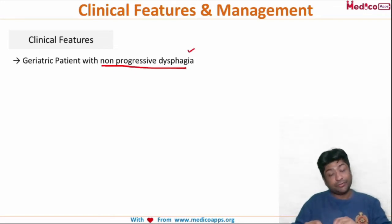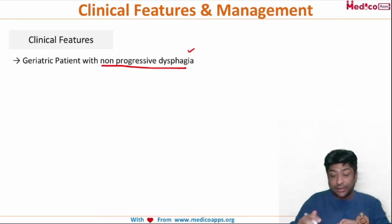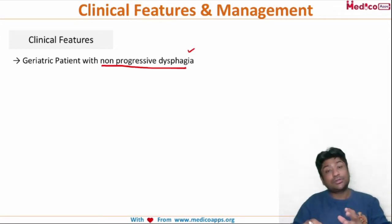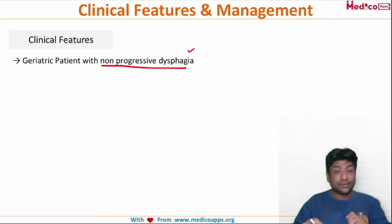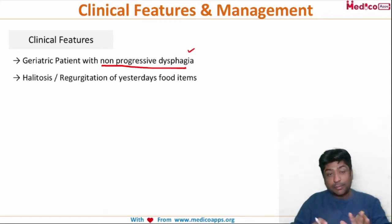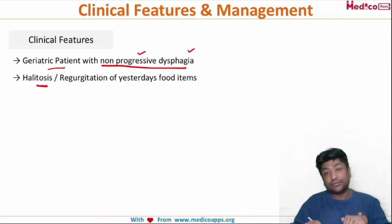Whereas in a carcinoma esophagus patient the dysphagia will be progressive. If you take a proper history, patients can also talk about halitosis because food will be impacted in the diverticulum. Along with halitosis you can have regurgitation of yesterday's food items — all that food may enter into the diverticulum and then be regurgitated. Remember the age group, remember dysphagia, remember halitosis and regurgitation of yesterday's food items.